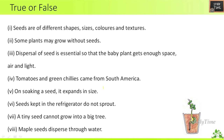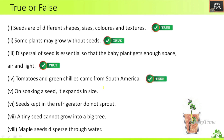True or False: Seeds are of different shapes, sizes, colors, and textures — True. Some plants may grow without seeds — True. Dispersal of seed is essential so that the baby plant gets enough space, air, and light — True. Tomatoes and green chilies came from South America — True.